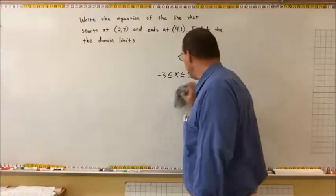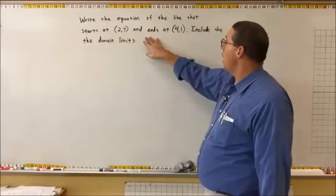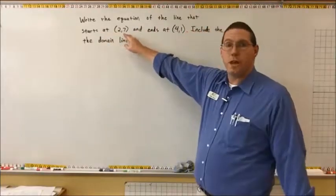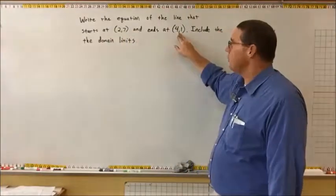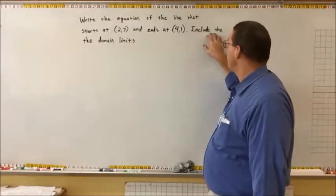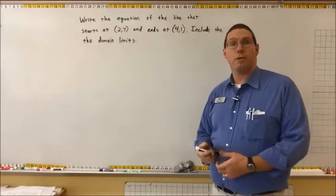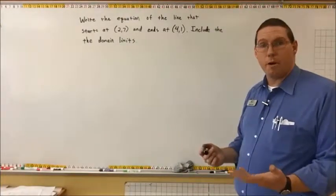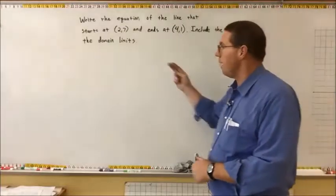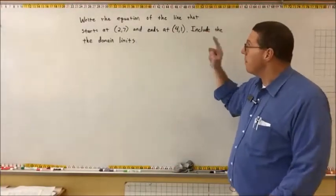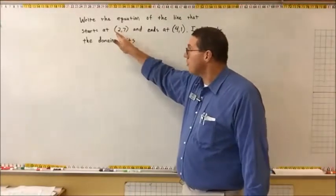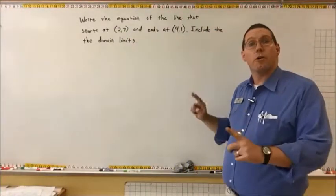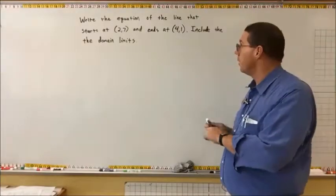We're going to write the equation of the line that starts at the point (2, 7) and ends at the point (4, 1), and don't forget to include the domain limits. If we write the equation of the line without domain limits, the assumption is that it goes from negative infinity to positive infinity. But this line starts at (2, 7) and ends at (4, 1), so it doesn't go on to infinity — it's a limited line.